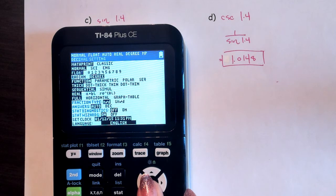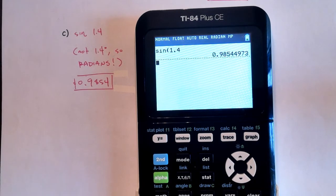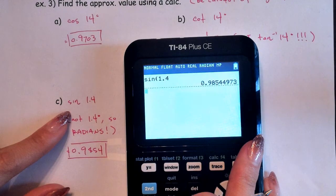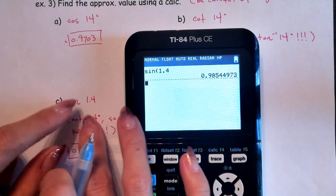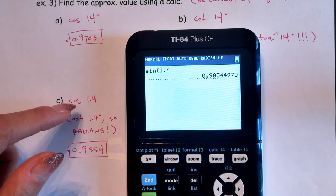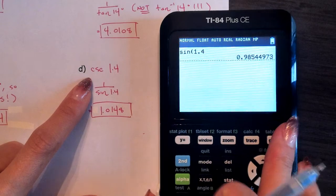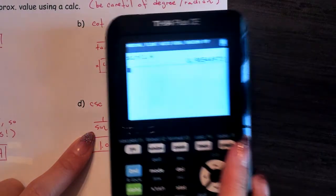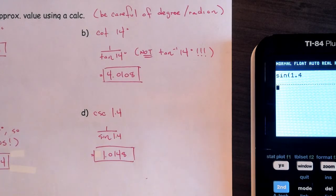When there are no degree symbols, that means radians. Go back to Mode, highlight radians, and then sine of 1.4 gives you the correct answer. If the number doesn't have a degree symbol and you're in degree mode, you may get an error or wrong result. For cosecant, remember it's 1 over sine — not sine inverse, which is totally different. Plug in 1 divided by sine of your value and you get the answer.